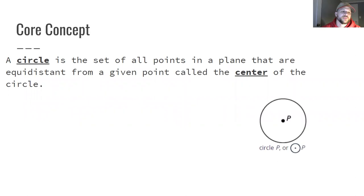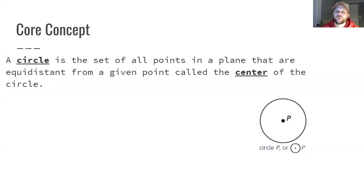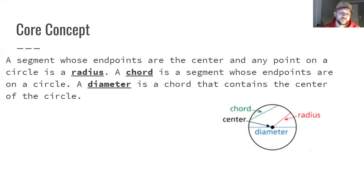A major core concept of this entire unit is looking at circles. A circle is a set of all points in a plane that are equidistant from a given point called the center. With center point P, every point drawn from P must be the same distance from that center. All of those equal distances are segments called the radius, like the red line in the diagram.